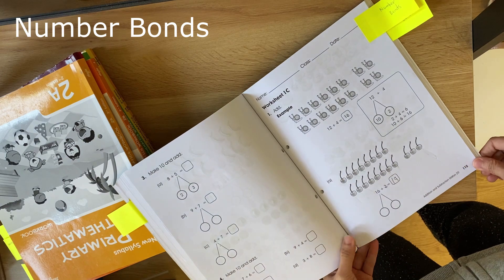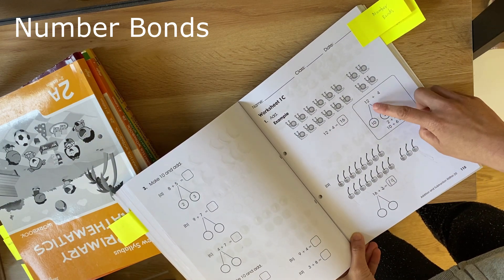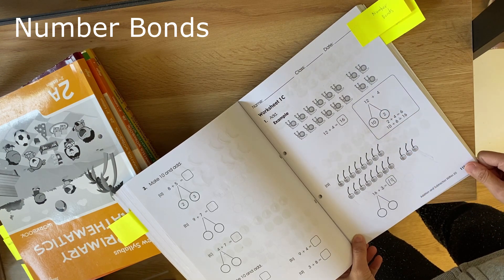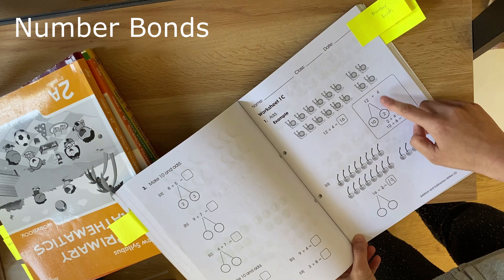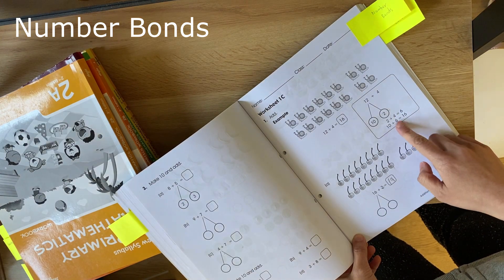So here's an example of using the number bonds in an addition question. So we know that 12 is the same as 10 plus 2. So if you do 2 plus 4, so that's these two numbers equals 6, it's much easier to work out in your head what 10 plus 6 is.